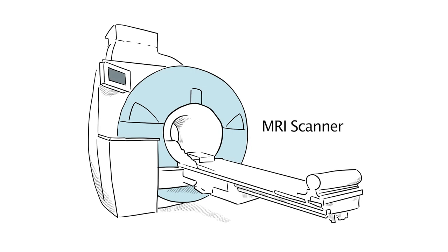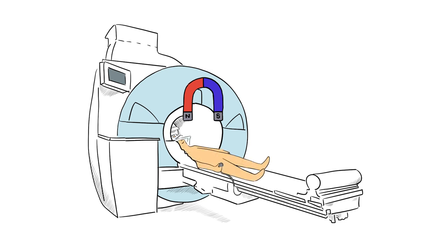But first, let's see what an MRI scanner looks like. MRI scanners have a large, tube-shaped magnet that creates a strong magnetic field. Inside the magnet, we can take images of the human body.